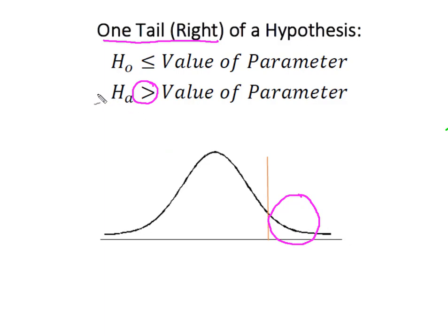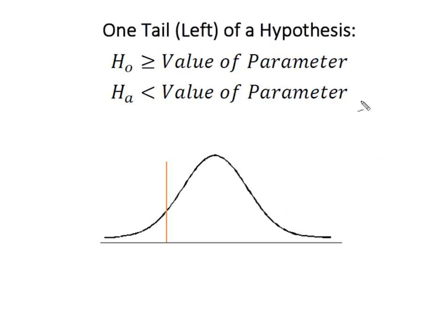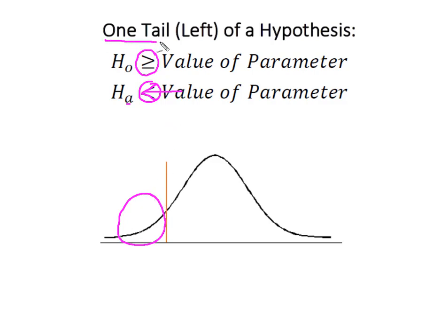If you can't remember it, remember that the 'greater than' sign is simply an arrow that points to the right, sending you to the right tail. Last but not least, the mathematical opposite of 'greater than or equal to' is 'less than.' We go to HA to find the direction of our test — this arrow tells us our rejection region is in the lower tail of the curve, giving us a one-tailed left test.